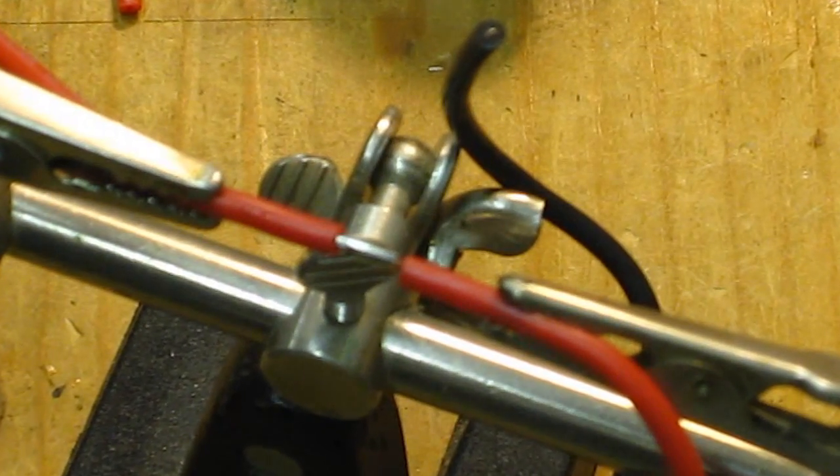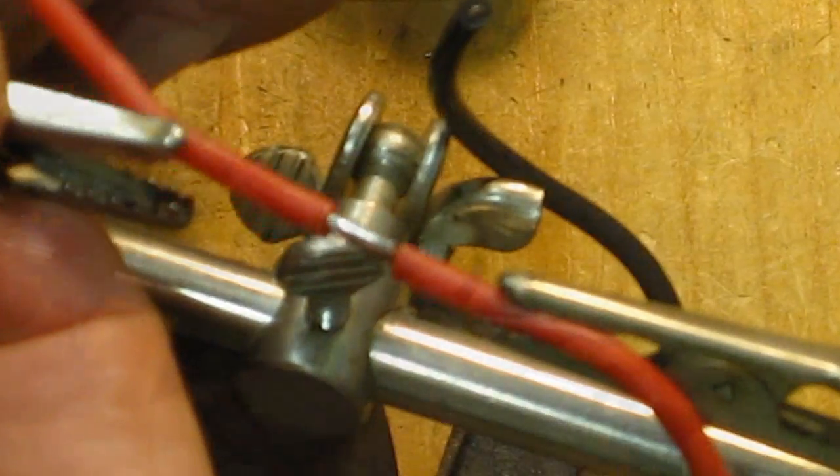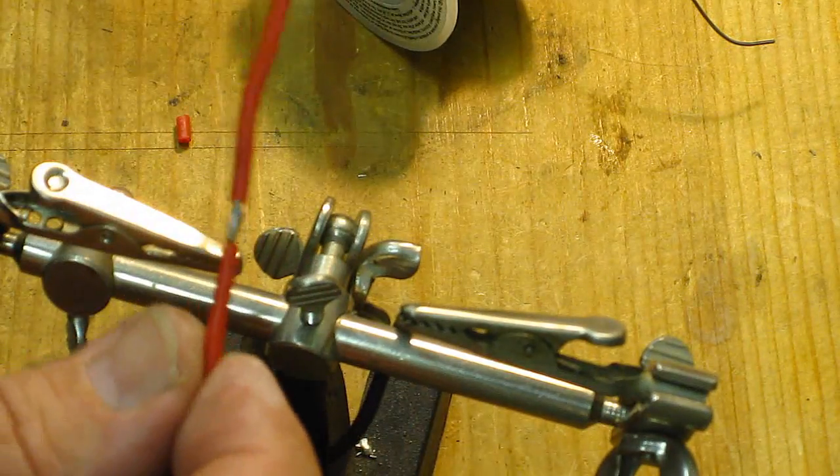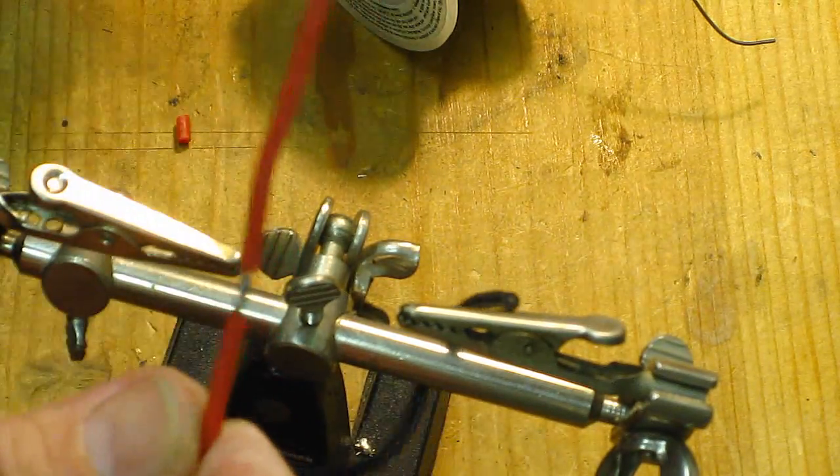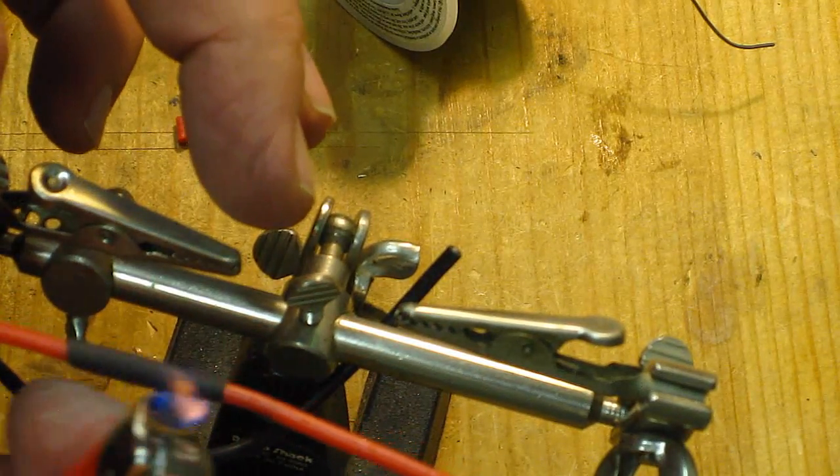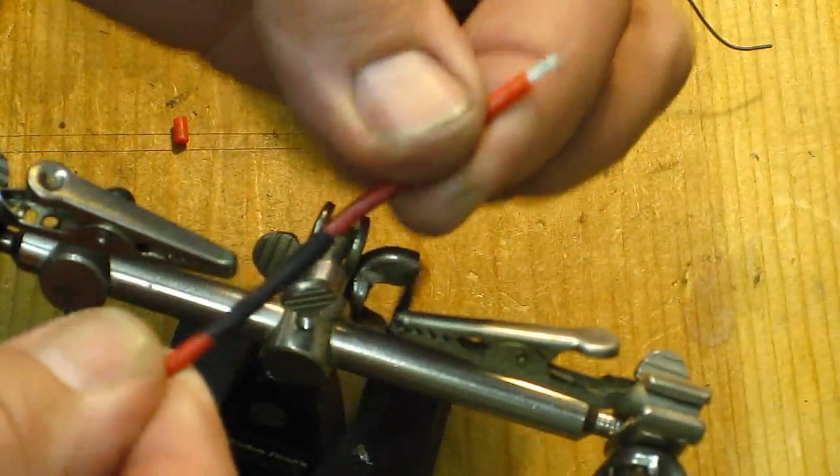Now we have a perfect joint that is almost the same size as the wire. Now we will just put the shrink tubing over top of that and heat it up. You can heat that up gently with a lighter if you don't have a heat gun. That's it, a nice really good joint.